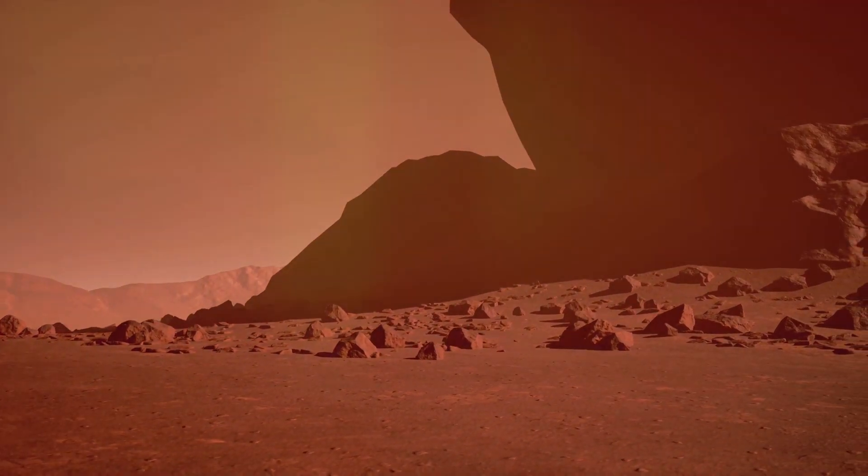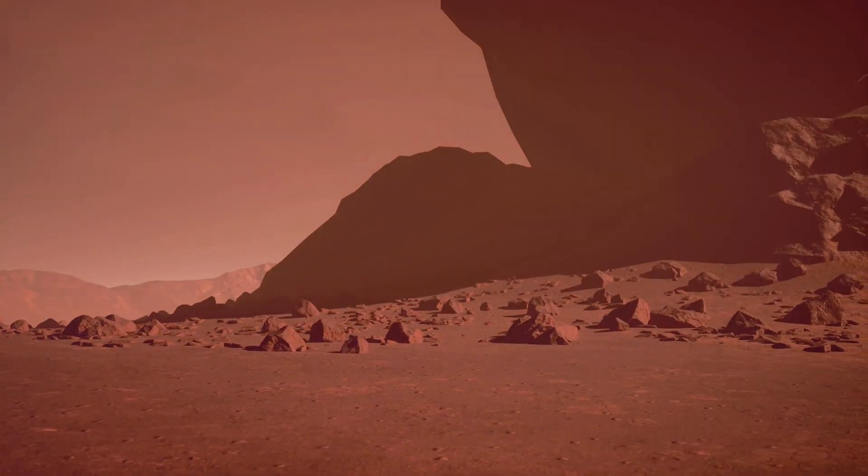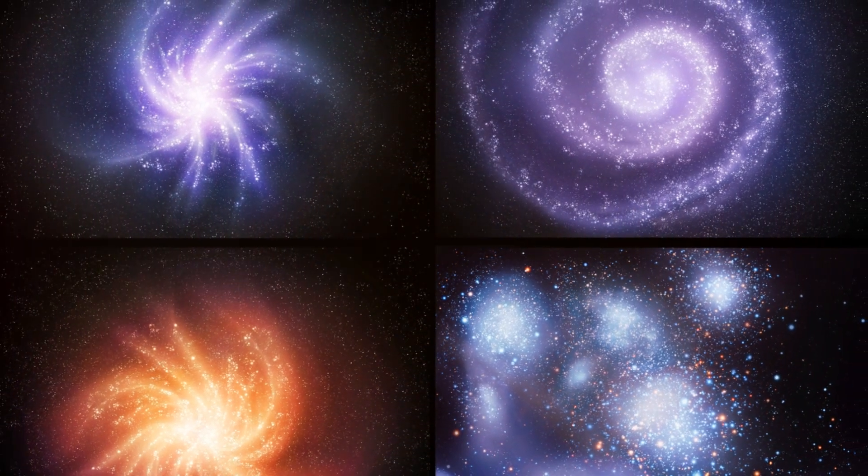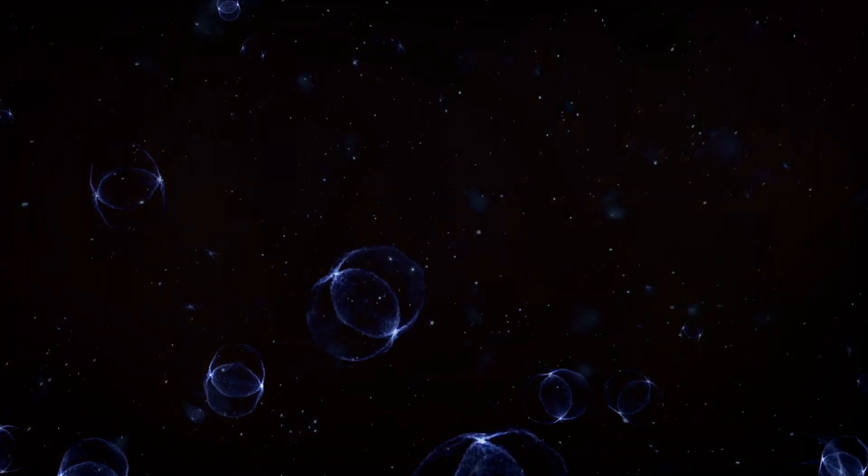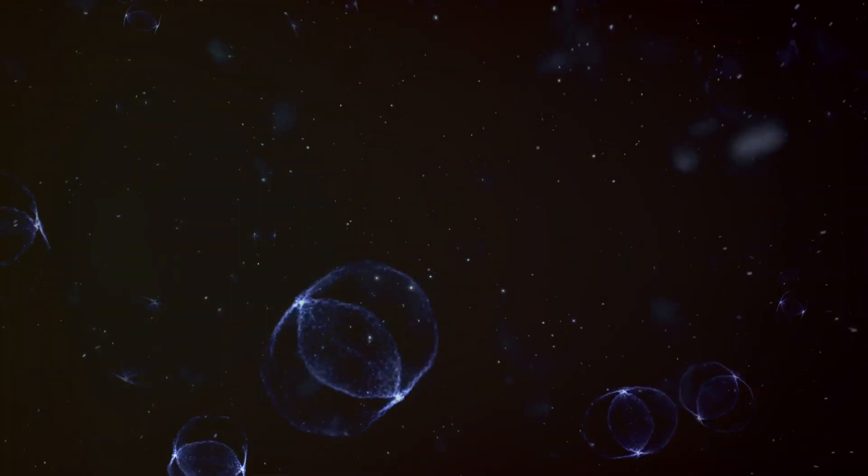Imagine Mars as Earth a billion years in the future, and Venus as Earth a billion years in the past. If this theory holds true, could it imply that our galaxies themselves are simply a single galaxy in different stages of its evolution? And if that's the case, what could this mean for us?